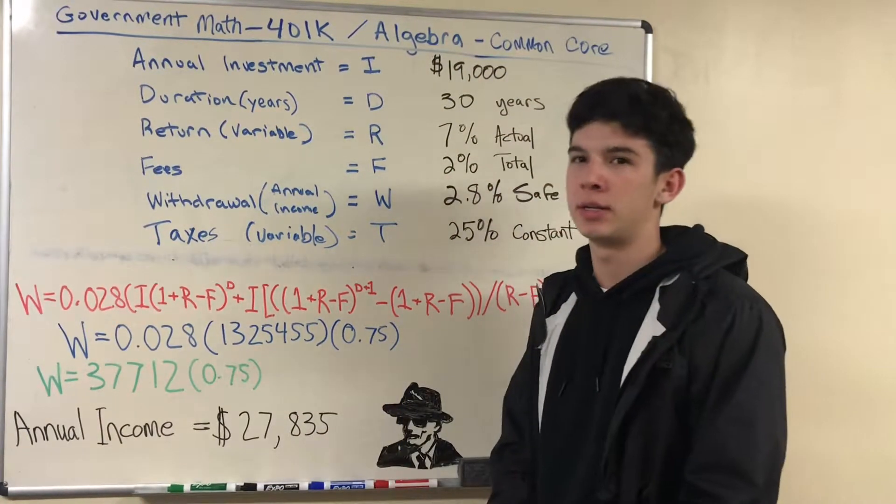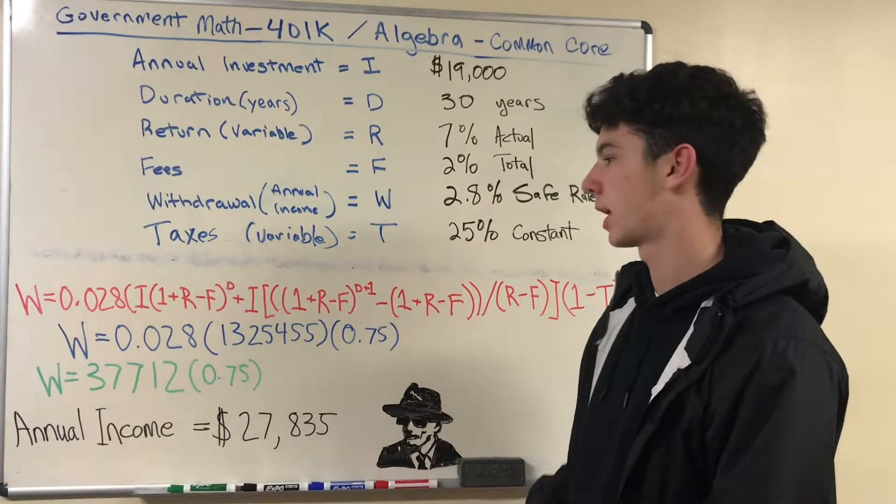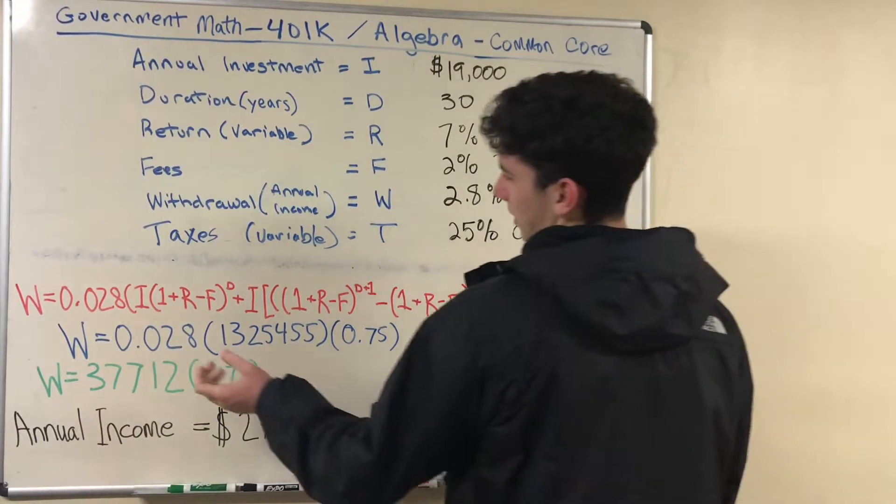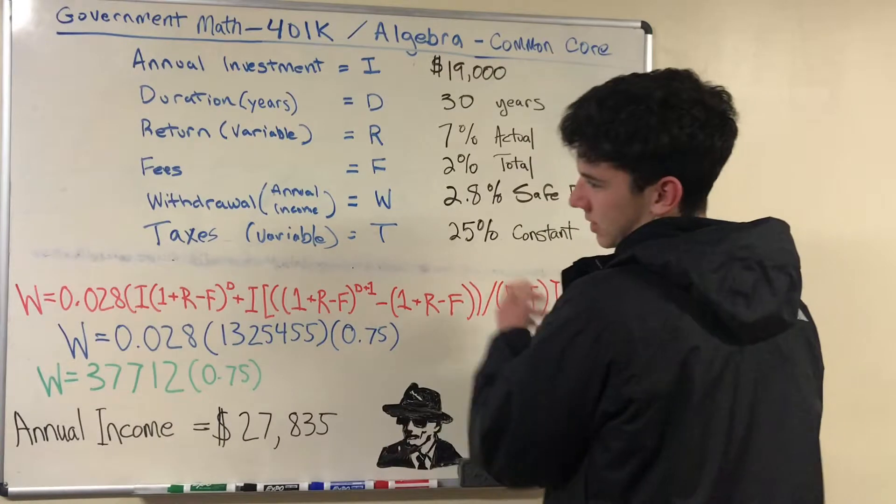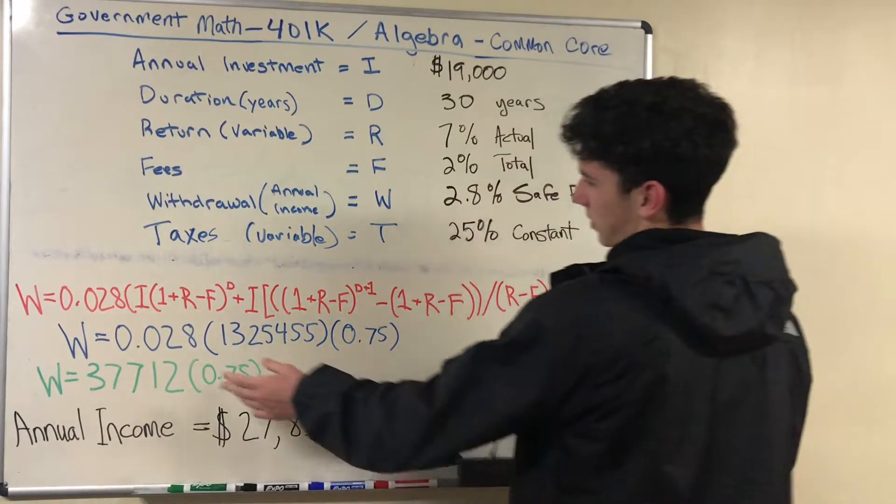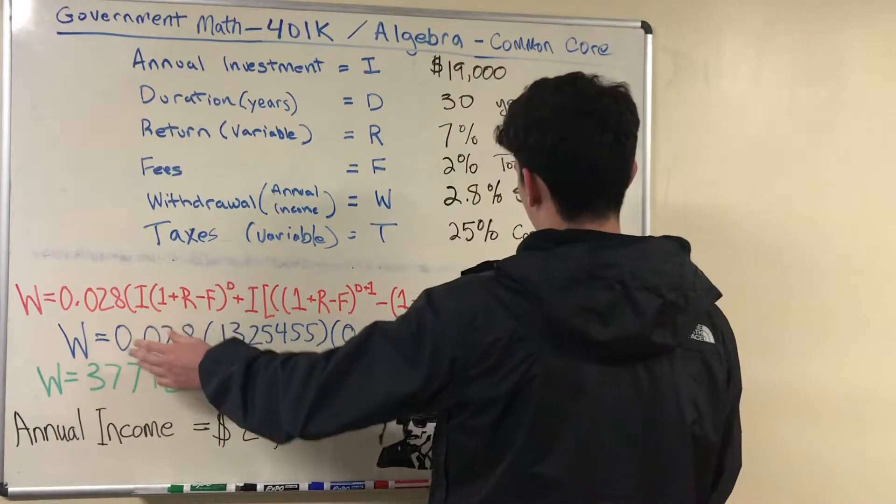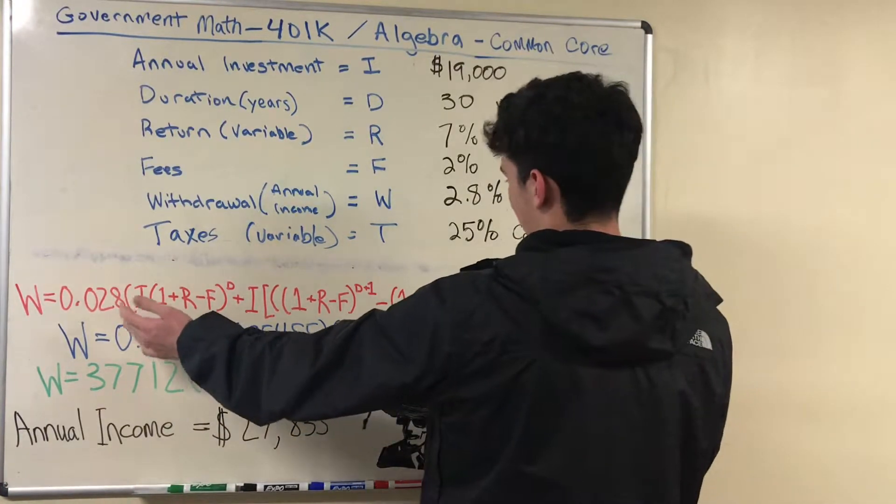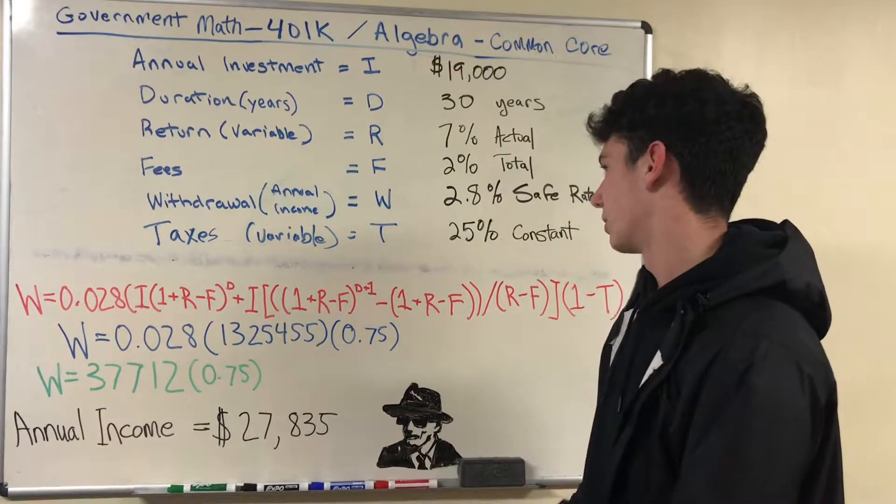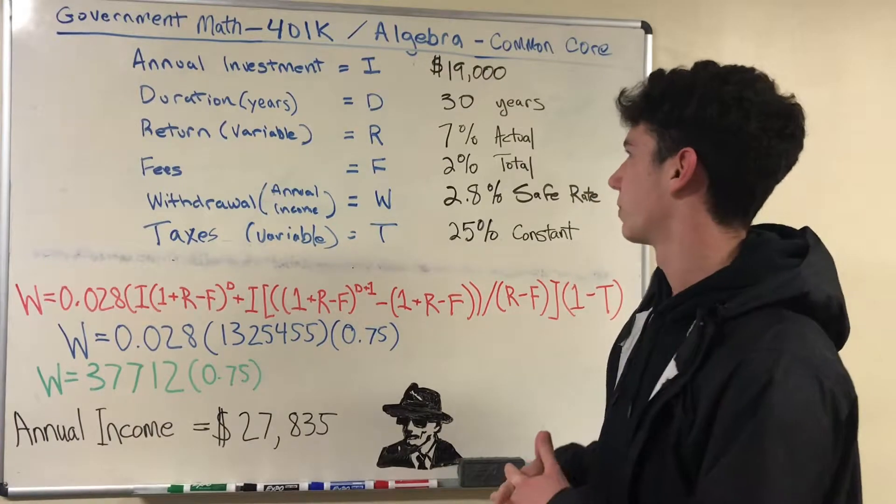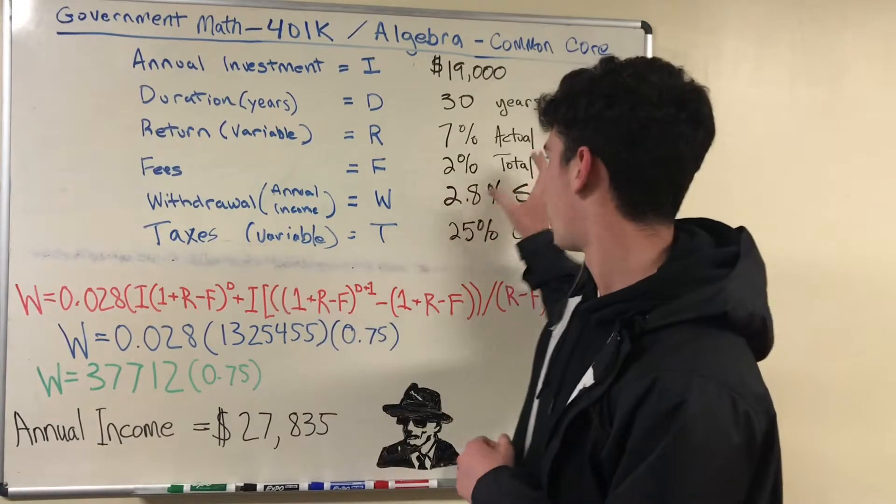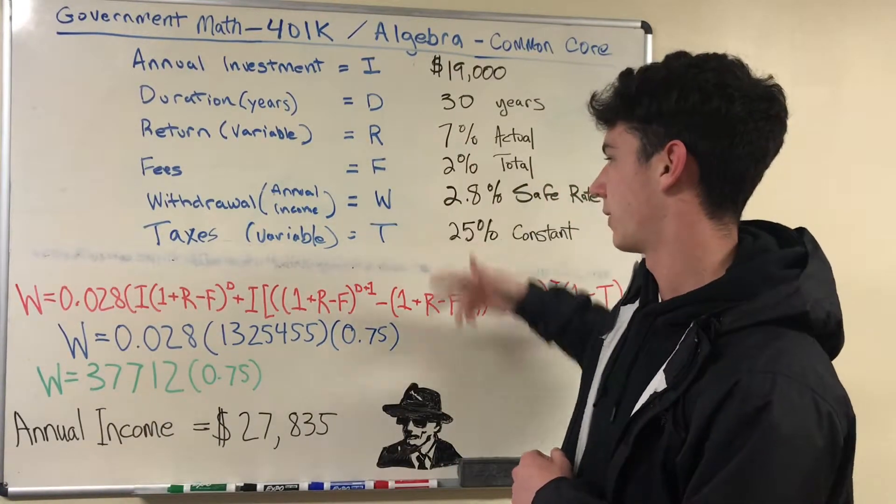Hey I'm Ethan and I'm going to be explaining the formula to calculate your annual withdrawal from a 401k. So basically this is the 2.8 percent for the safe withdrawal rate every year and right here is the taxes. You're going to multiply the safe withdrawal rate by the taxes and this long part right here is how you calculate the compounding interest for your annual investment. Basically once you put all these numbers into their variables you'll get 1.3 million.